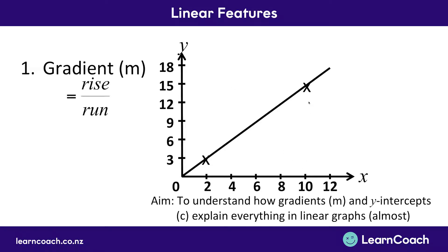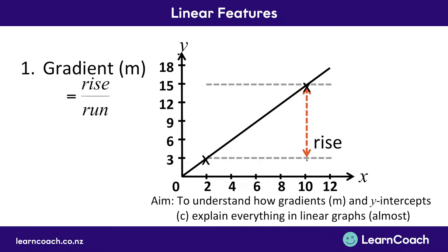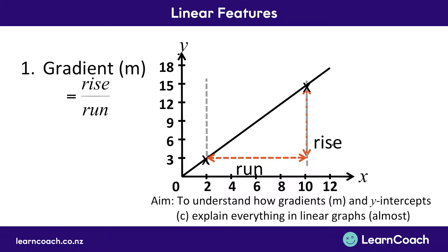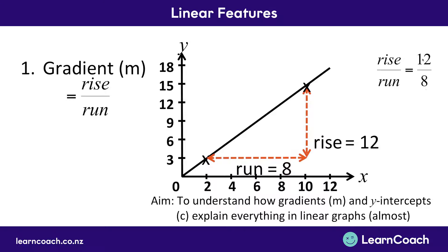I've chosen the first point being 3 up on the y-axis and 2 on the x-axis, and my second point being about 15 on my y-axis and about 10 on my x-axis. It doesn't matter which two points you pick — any two points will do, just pick two that you know. Once you've picked your two points, work out the rise, which is the vertical distance between them, and the run, which is the horizontal distance. If it goes from 3 up to 15, the rise is 12. Running across from 2 to 10, the run is 8. Putting these into the formula: rise over run equals 12 over 8.